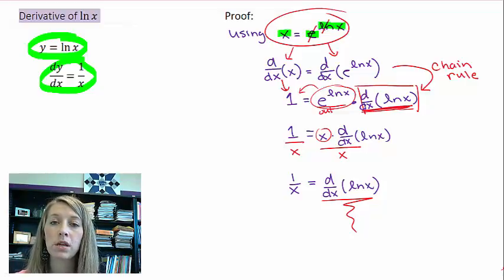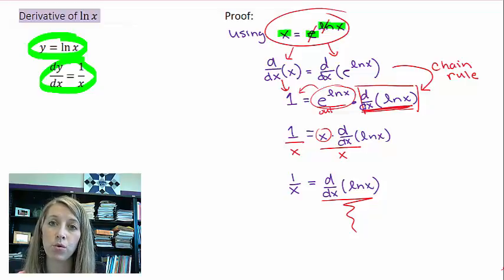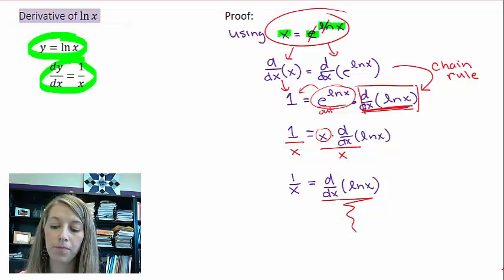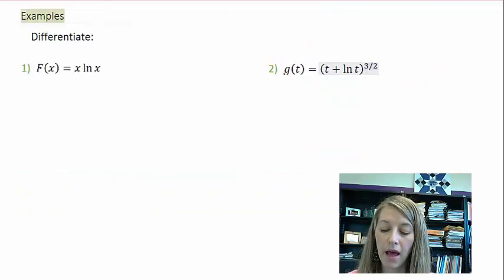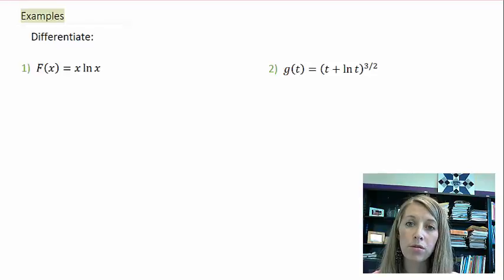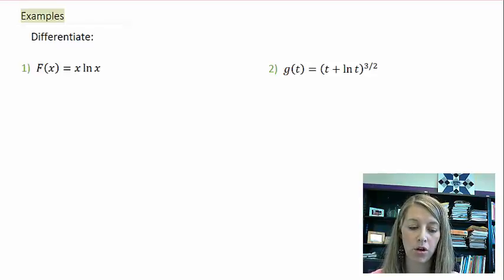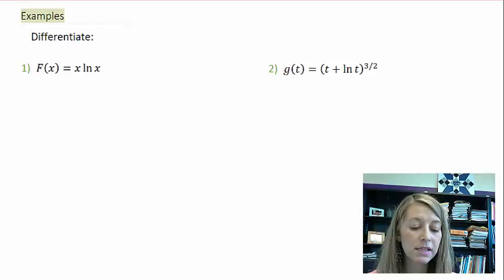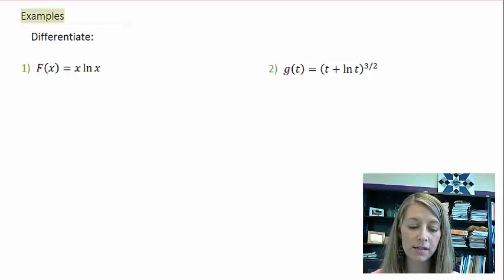So again, all we're going to do is combine this with all of the other derivative rules that we know so far. I have two examples here. I'll work through these, and then hopefully you can work through the rest on your own. My first one: f of x is equal to x times natural log of x.